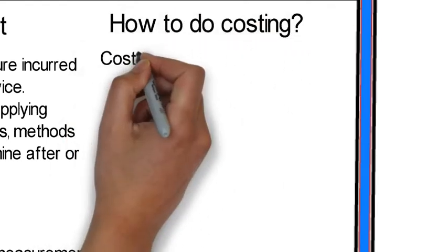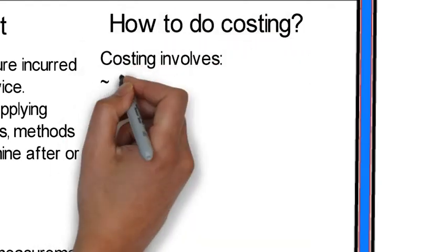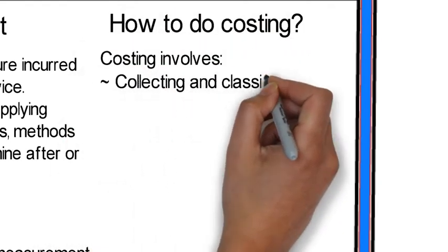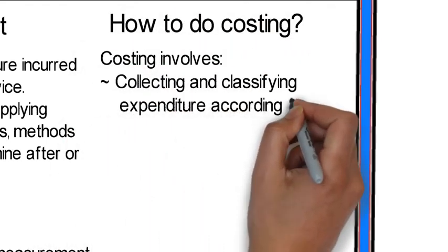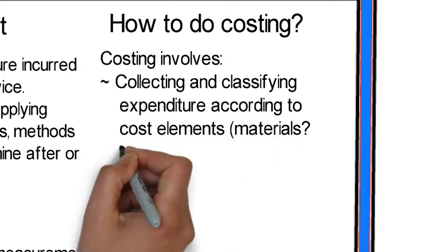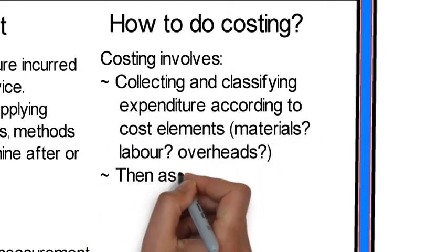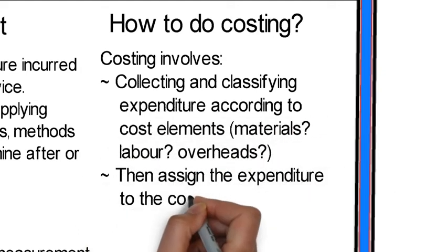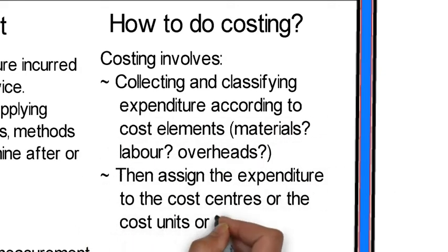How to do costing. Costing involves collecting and classifying expenditure according to cost elements — materials, labor, or overheads — then assigning the expenditure to the cost centers, the cost units, or both.